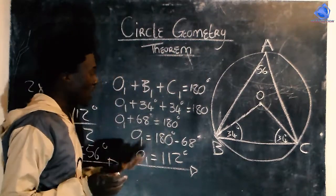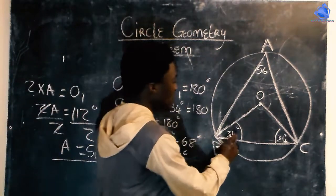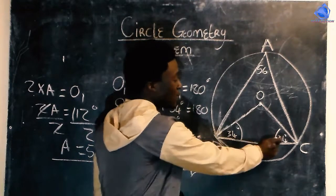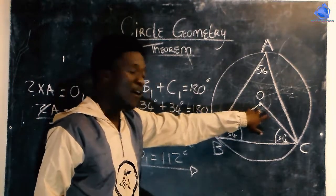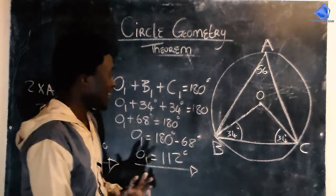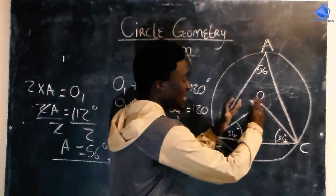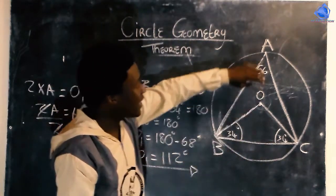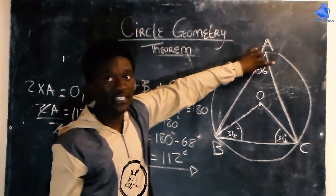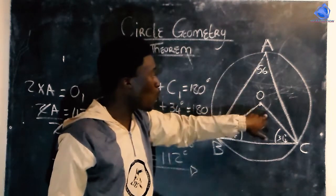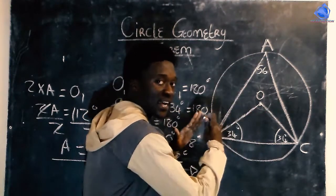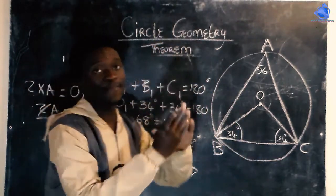I will prove that 34 plus 34 equals 68. If you use 68 plus 112, then you will get 180. Then angle A is 56. If you use 56 times 2, then you will get 112, because the angle at the center is twice the angle at the circumference.